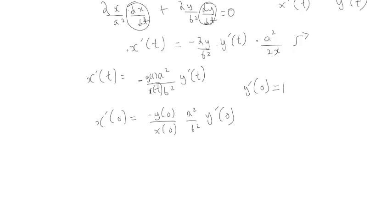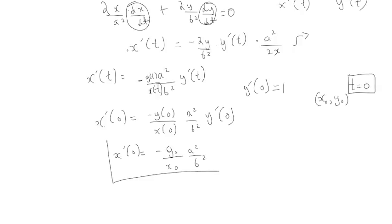We know the initial position of the particle is (x₀, y₀) at time equals 0, when the particle hasn't moved at all. Using y'(0) = 1, we get: x'(0) = −y₀/x₀ · a²/b². This gives the rate of change of x at t = 0 — when time equals 0, the particle's rate of change in the x direction equals −y₀/x₀ · a²/b².